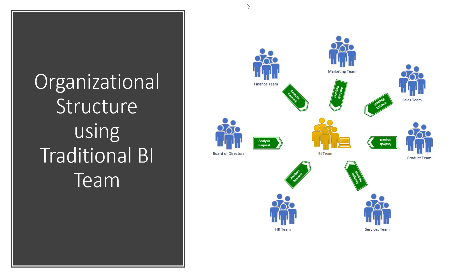That was how the structure was built, especially because BI tools were not analyst tools. But that structure had challenges. As you can see in this screenshot, all requests came to the BI team, creating a bottleneck. The BI team was responsible for answering all analytical questions with limited resources. Some bigger companies grew their BI teams to 50 or 60 people — huge teams answering analytical requests from all other departments.